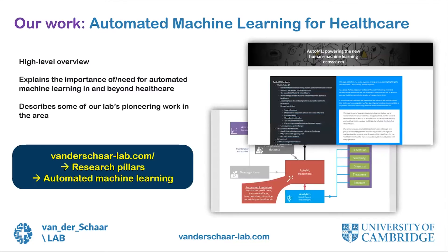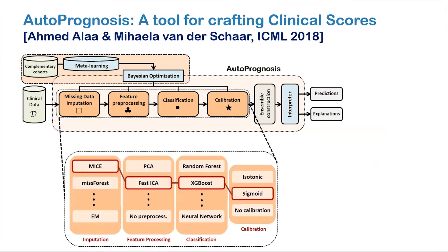Our own work in the lab focuses on a particular branch of automated machine learning for healthcare, which is quite distinct from other work in automated machine learning. Our journey in automated machine learning for healthcare started with the first version of AutoPrognosis — a tool for crafting clinical scores. It takes clinical data and builds pipelines of imputation, feature processing, classification, and calibration. These pipelines not only issue predictions but often construct ensembles of multiple pipelines weighted together, and also issue explanations.